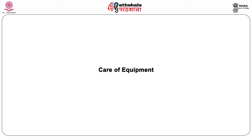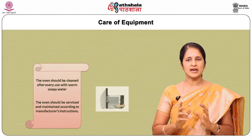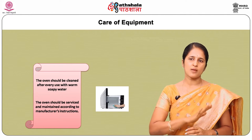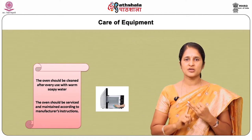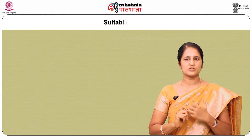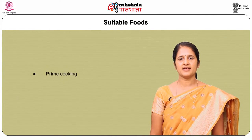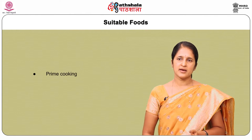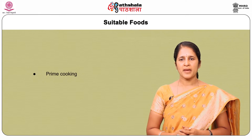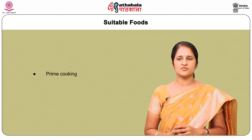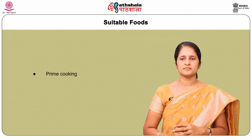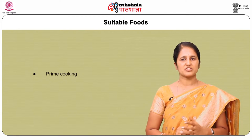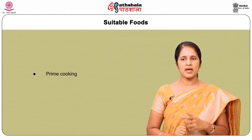Regarding care of equipment, the oven should be cleaned after every use with warm soapy water and serviced and maintained according to the manufacturer's instructions. Most foods contain a large proportion of water and can therefore be cooked raw in a microwave oven. Baked flour products are not particularly successful because crispness, color, and aeration are difficult to achieve. Cheaper cuts of meat do not have time to dissolve out the collagen and tend to remain chunky.